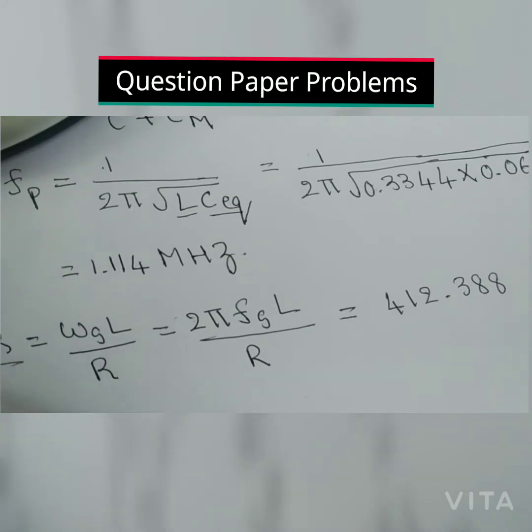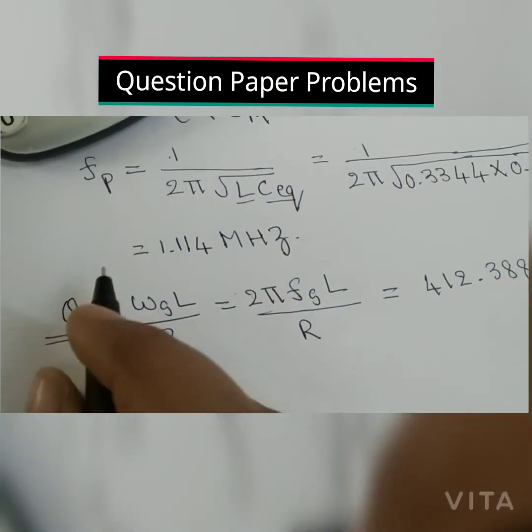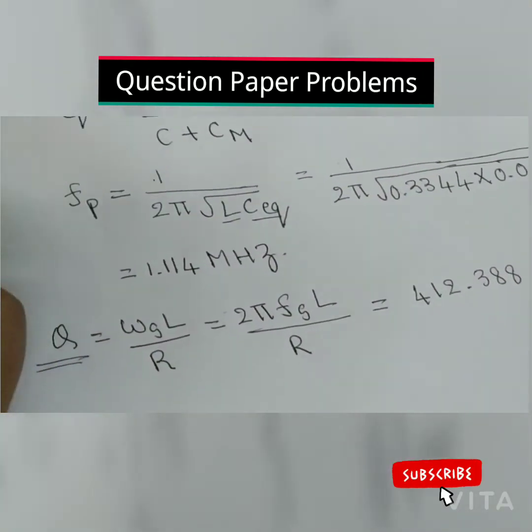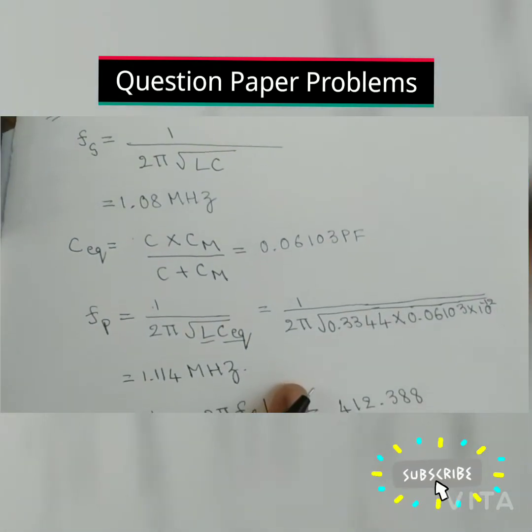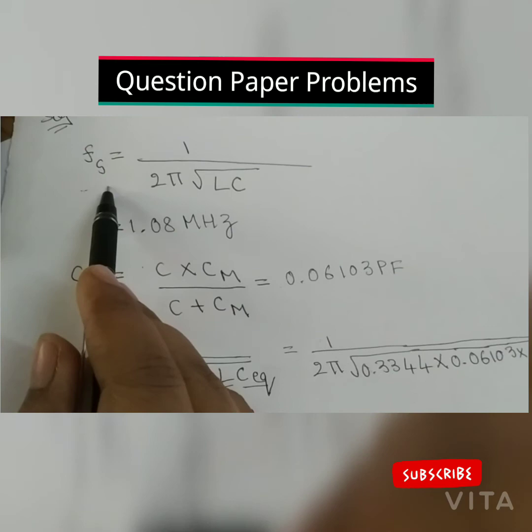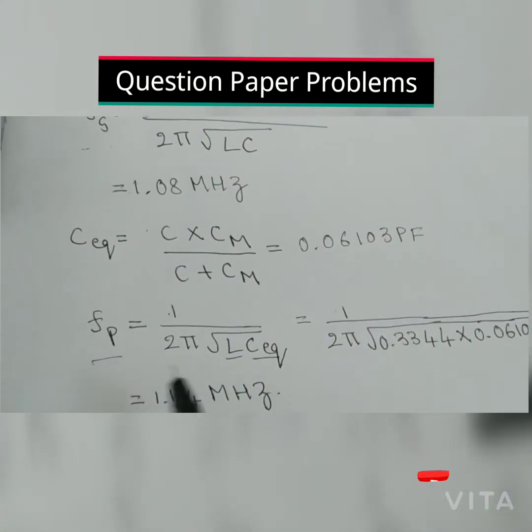If they have asked to find out Q then find it out. If they have asked only to find series resonant frequency and parallel resonant frequency, then you need to find out those two values, that's enough.